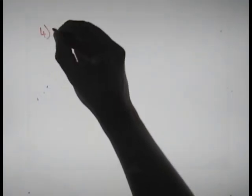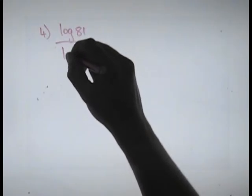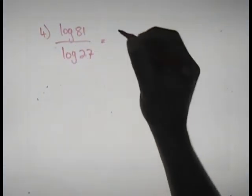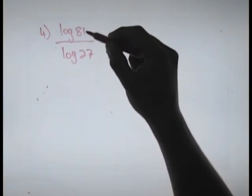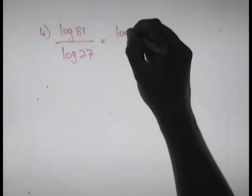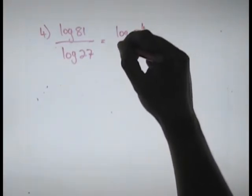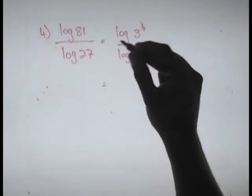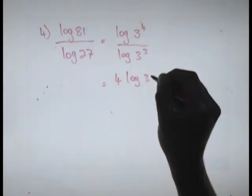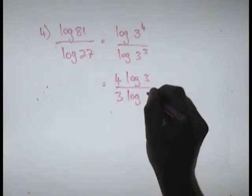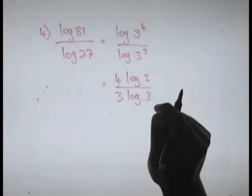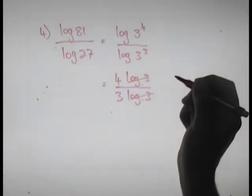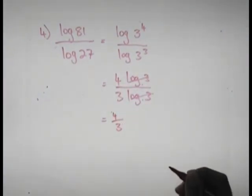The fourth one was: log 81 divided by log 27. I'll simplify: 81 is 3 to the power 4, and 27 is 3 to the power 3. Bringing the exponents to the front gives 4 log 3 divided by 3 log 3. Both are to a base of 10. Log 3 divided by log 3 cancels out, leaving an answer of 4 over 3.